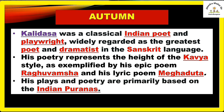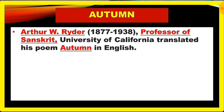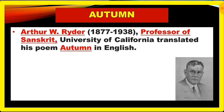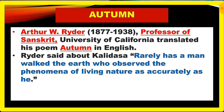His plays and poetry are primarily based on the Indian Puranas. This poem is a translation by author W. Ryder, born in 1877 and died in 1938, a professor of Sanskrit at the University of California, who translated this poem 'Autumn' into English. Ryder said about Kalidasa: 'Rarely has a man walked the earth who observed the phenomena of living nature as accurately as he.'